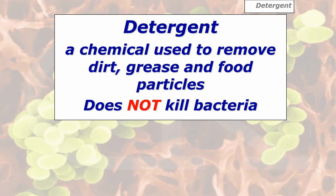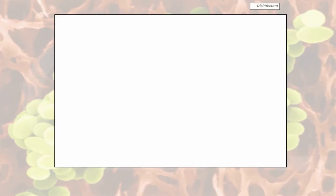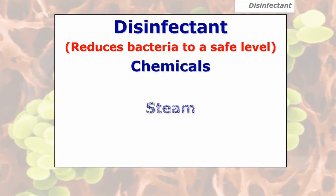A detergent is a chemical used to remove dirt, grease, food particles, and grime. It does not — please remember that because a lot of people get this wrong — it does not kill bacteria. We need to use another product in order to kill bacteria, because we might be working with a food preparation board where we've cleaned it and used the detergent, but there might well still be bacteria present. So we need to get rid of them, and we will use a disinfectant.